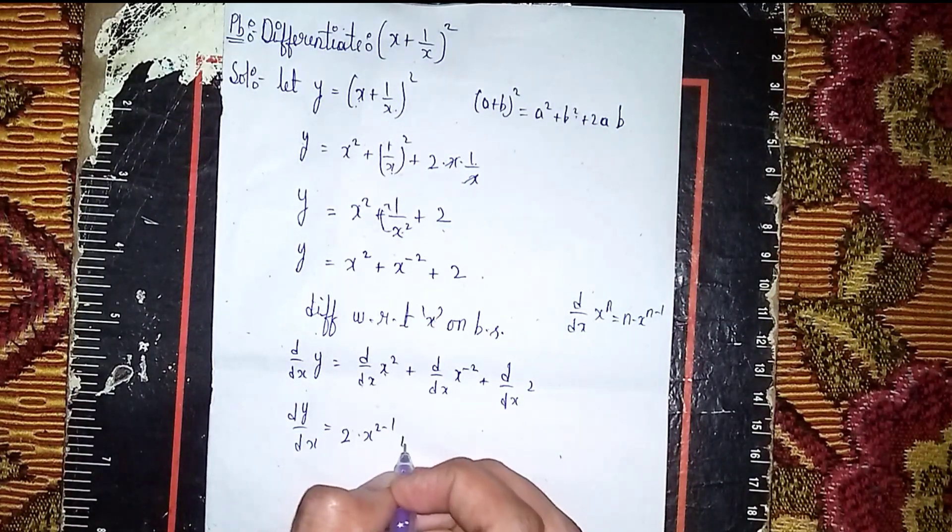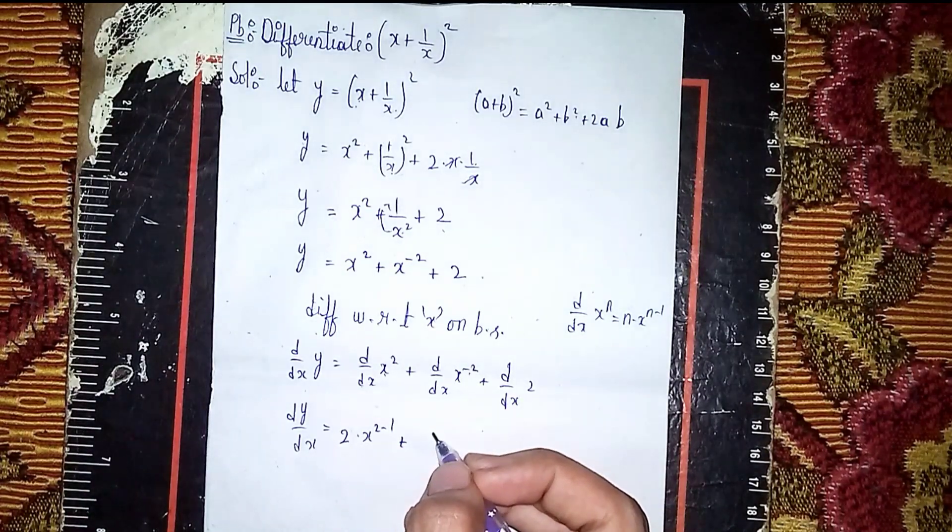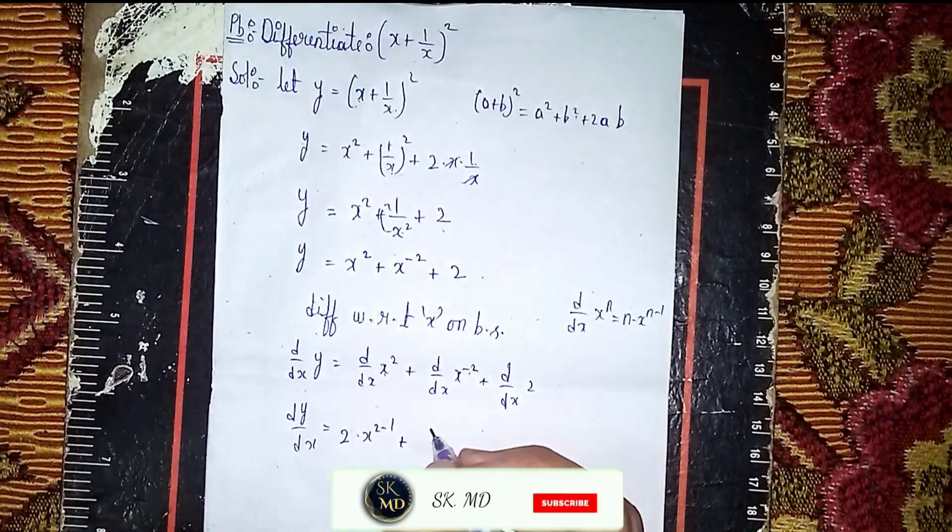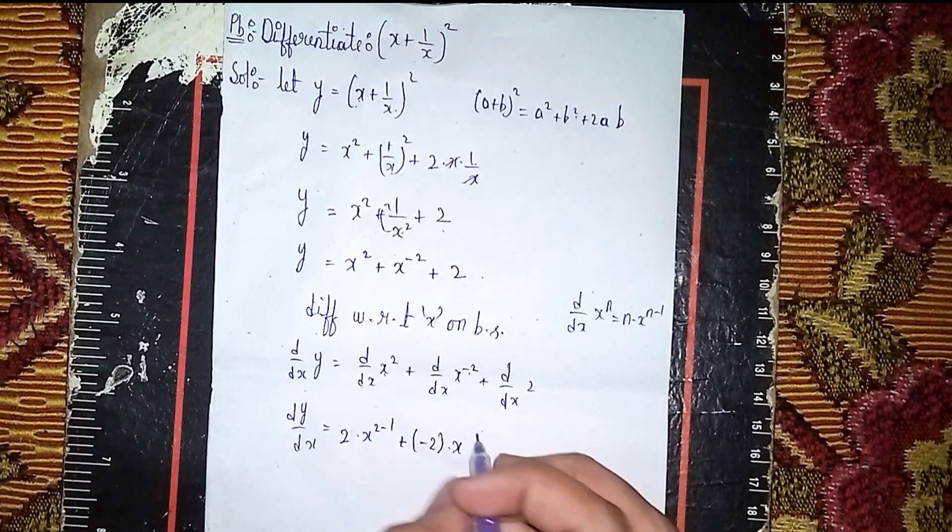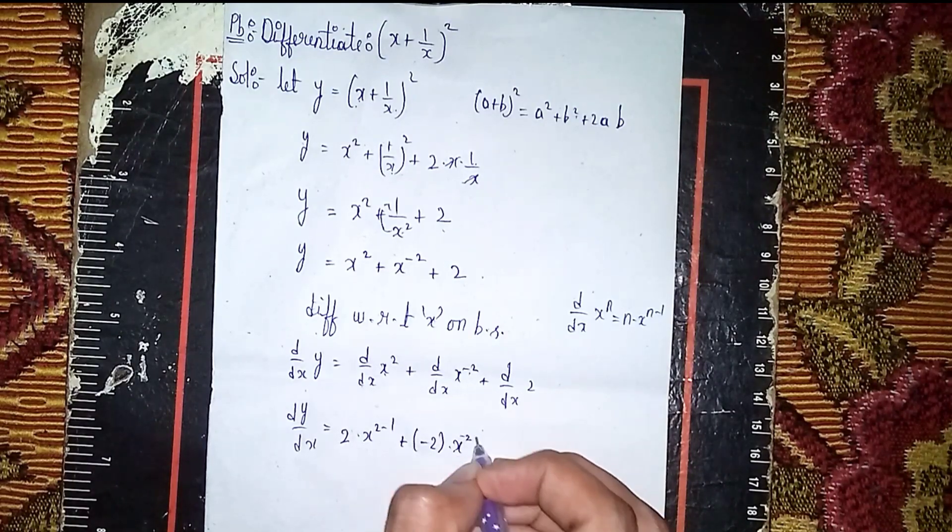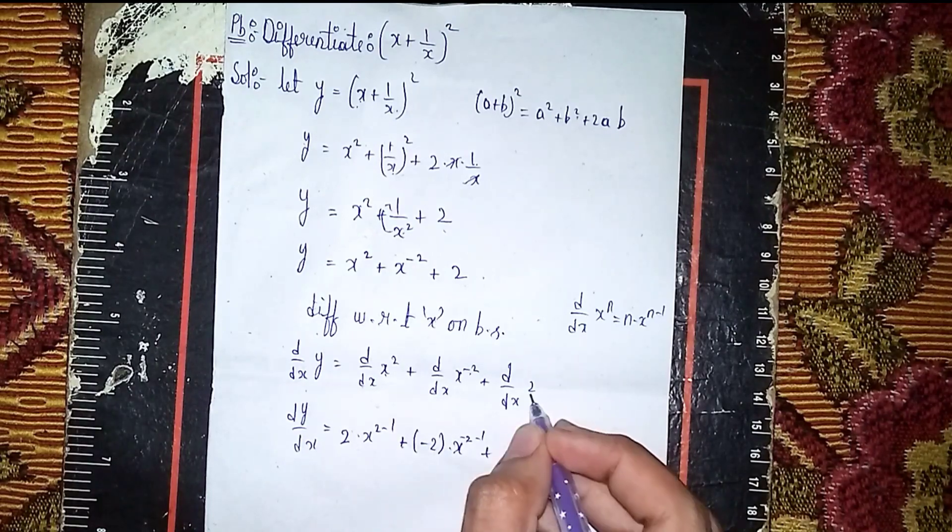Plus then again same formula, so here it becomes (-2) times x^(-2-1).